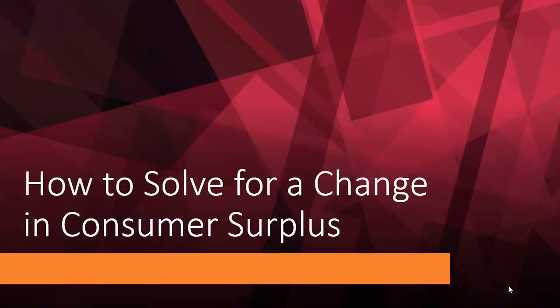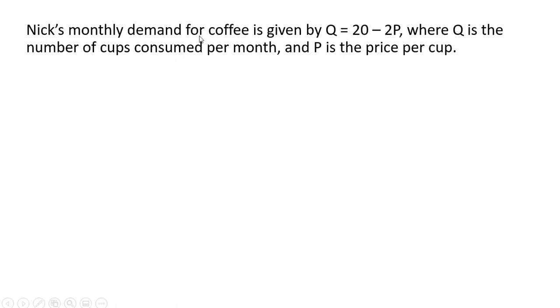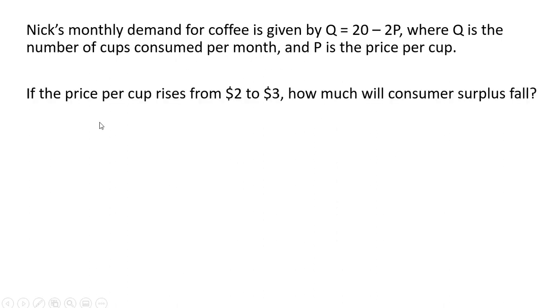In this video we're going to look at how to solve for a change in consumer surplus from a price increase. Nick's monthly demand for coffee is given by Q = 20 - 2P, where Q is the number of cups consumed per month and P is the price per cup. If the price per cup rises from $2 to $3, how much will consumer surplus fall?